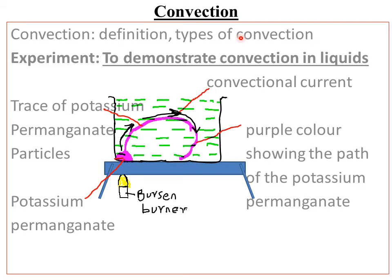Natural convection involves changing density of the fluid with temperature. When you heat a fluid, it expands, its volume increases, and therefore its density reduces. When the density reduces, that fluid floats to the surface, while the denser, unheated fluid moves downwards. That movement is what we call natural convection.